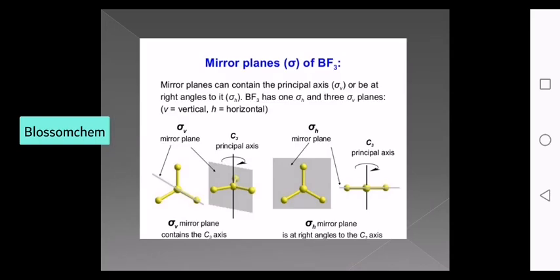Next, consider BF3 as a mirror plane example. BF3 has a boron center with three fluorine atoms on three sides. C3 is the principal axis — the vertical axis. The molecule lies in a plane perpendicular to this principal axis, giving a horizontal mirror plane (sigma h) for BF3.